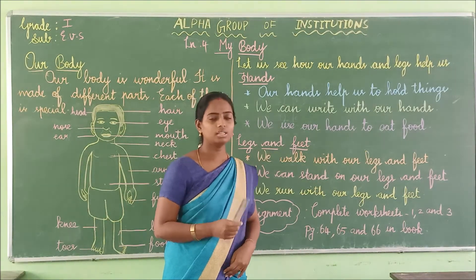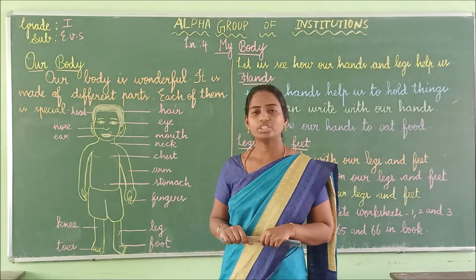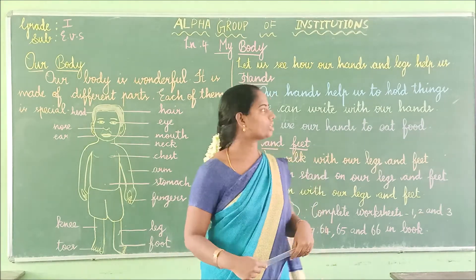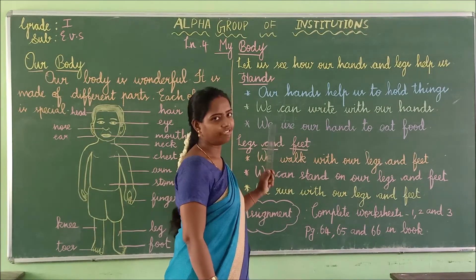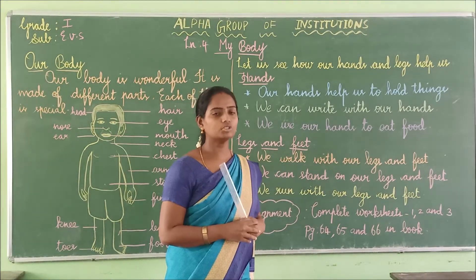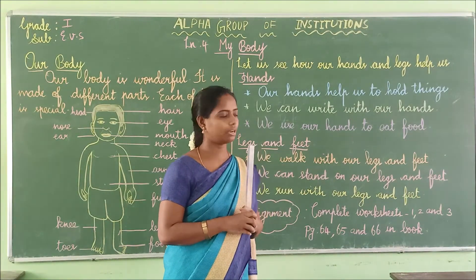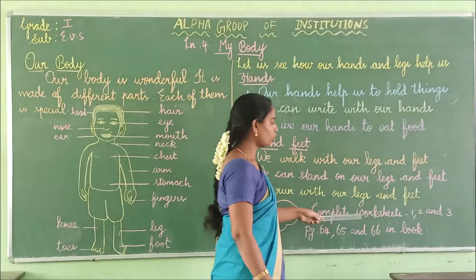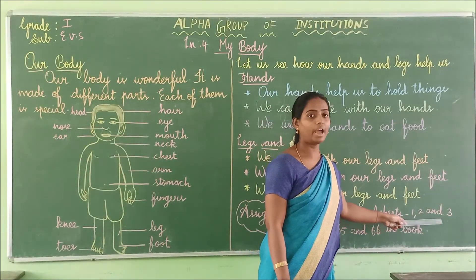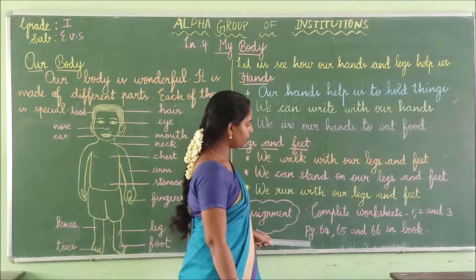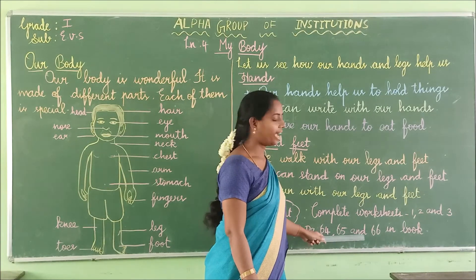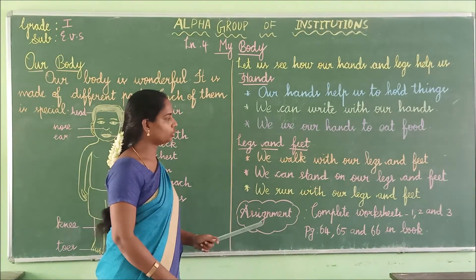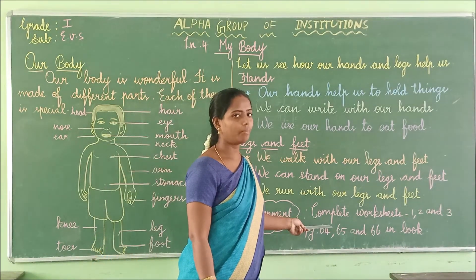Okay, children. These are all the things about today. We saw about various parts of our body, and we also saw about hands, legs and feet. Next class, we will see about sense organs. Today's assignment is to complete worksheets one, two and three in page numbers 64, 65 and 66 in your book, children. This is your today's assignment. Don't forget to complete it, children.